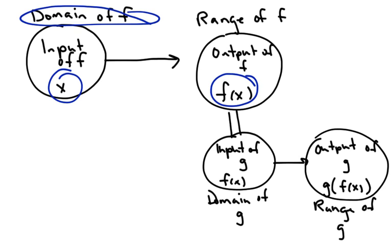The output, f of x, becomes the input of a second function. So you plug whatever number you have into this other function. And the number that comes out, we call that g of f of x. And that's how a composition of functions works.